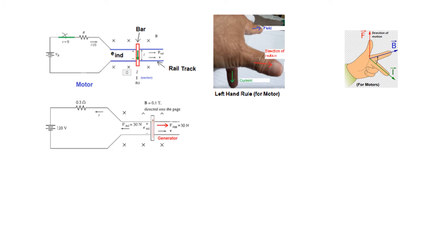Now let's take the example of a generator. This becomes a generator because we are using a force to move the bar — when a conductor moves in a magnetic field, it induces a voltage. In this case we are moving the bar towards the right with a 30 Newton force, and we need to find the direction of current: will it go from bottom to top or from top to bottom?